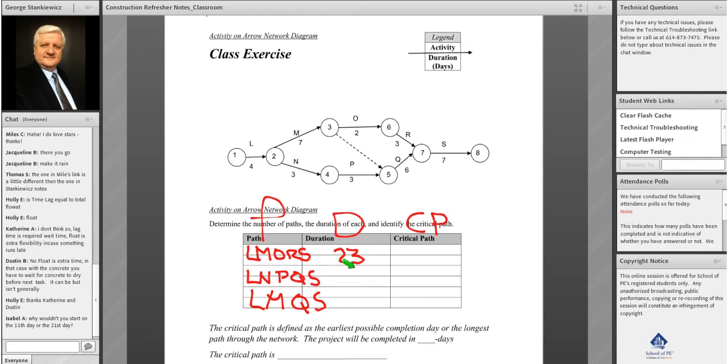Four plus three plus three plus six plus seven is 23 days, and then we have four plus seven plus six plus seven is 24 days. So we've completed our path duration.